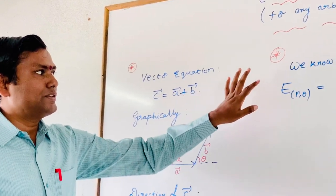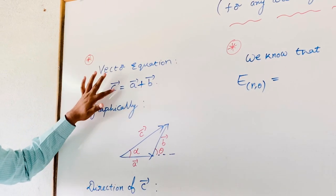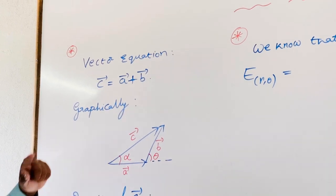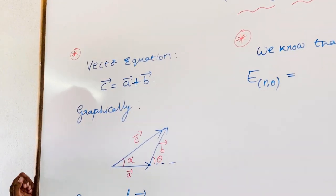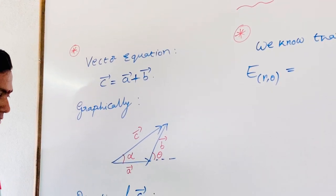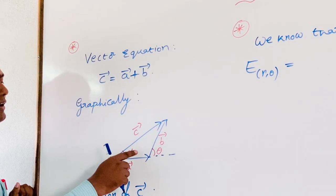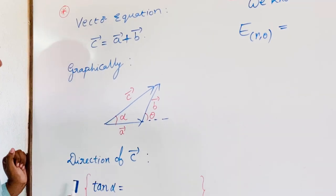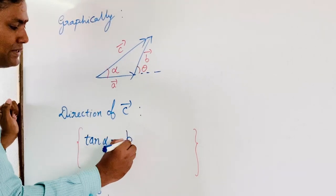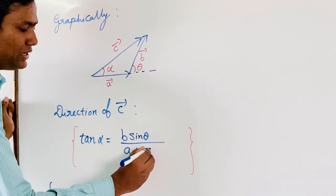Before going to this main topic, here we can recall one key idea. Suppose you have the vector equation: C-bar is equal to A-bar plus D-bar. Graphically, we can represent it in this manner. Here, alpha indicates the direction of C-bar with respect to A-bar. So what is that angle alpha? If you want to calculate that angle alpha, we can calculate tan alpha. Then tan alpha will come as B sine theta divided by A plus B cos theta. This is the vector equation result under the triangle law of vector addition.